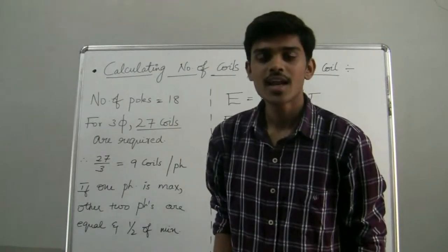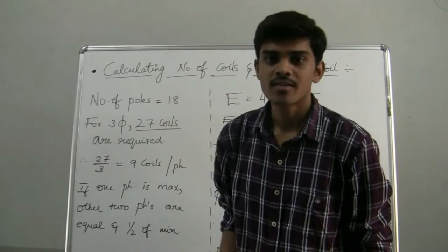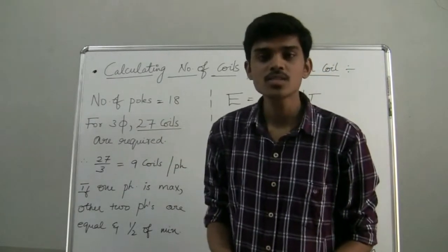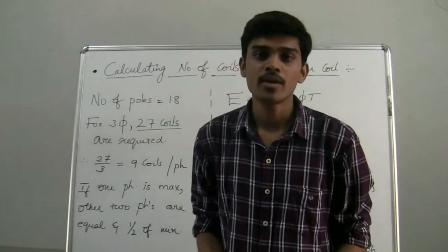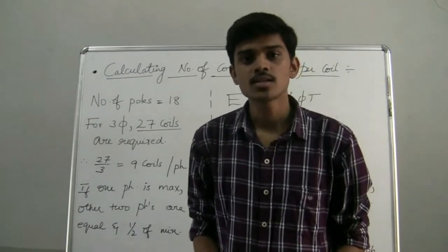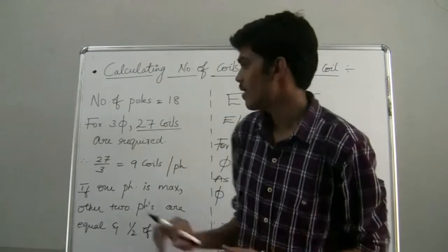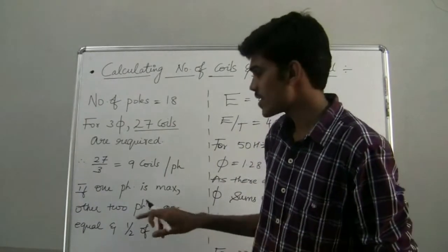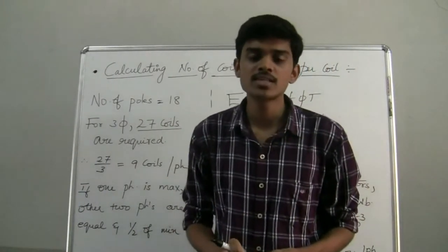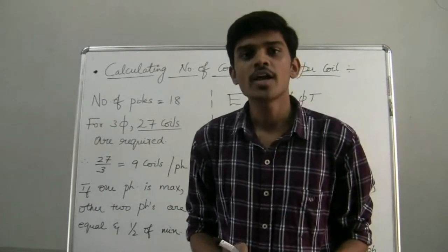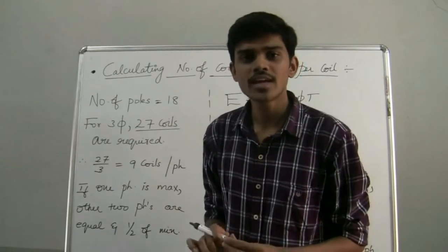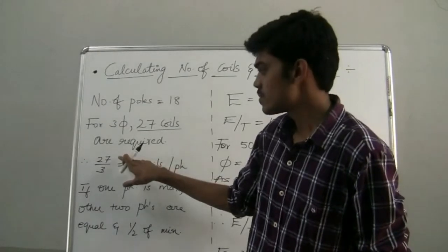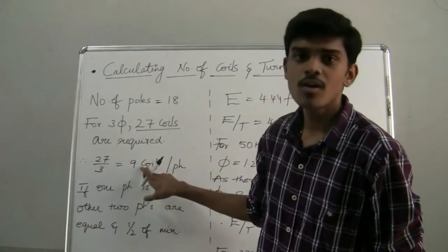Now let us see the calculations which form the basis of our stator design. As our generator consists of two rotors, we are implementing 18 poles per rotor. From the relation Speed = 120F/P, as the number of poles increases, speed decreases, which is optimum for a wind turbine. For a three-phase supply with 18 poles, 27 coils are required. This follows from the fact that if one phase is at its maximum, the other two phases are equal in magnitude and half of it in the negative axis. So 27 coils are required for the entire generator, giving 27 ÷ 3 = 9 coils for a single phase.